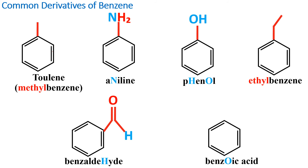The last one we're going to look at is called benzoic acid. Here the letter O is capitalized and bolded because instead of an H, this benzene ring is attached to a carbon-oxygen double bond and an oxygen-hydrogen group. O for oxygen. So really the difference between benzaldehyde and benzoic acid is the addition of the oxygen in benzoic acid.